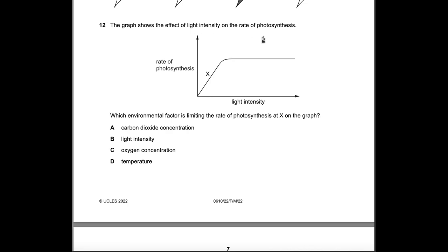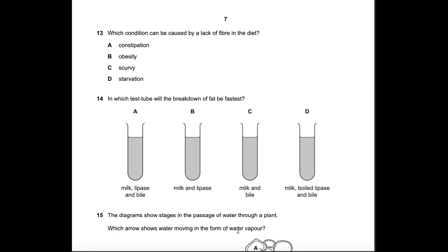Question 12: The graph shows the effect of light intensity on the rate of photosynthesis. Which environmental factor is limiting at point X? When the rate is still increasing with light intensity, light is the limiting factor. Point X is on the rising portion of the graph, not where it levels off. Answer: B, light intensity.